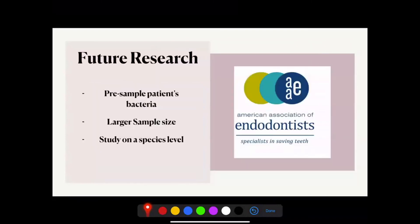Future research could include pre-sampling patients' bacteria in order to determine which course of treatment to use. If Enterococcus faecalis is identified — which is associated with retreatment cases — the use of a specific antibiotic could decrease the retreatment rate. Another change could be to increase the sample size by sampling more patients' bacteria, which would broaden the diversity of bacterial species identified. Since this study analyzes communities of bacteria, future work could study the effect of irrigants and antibiotics at the species level.